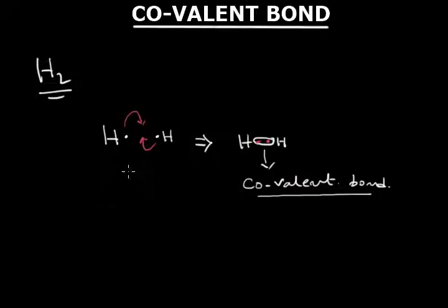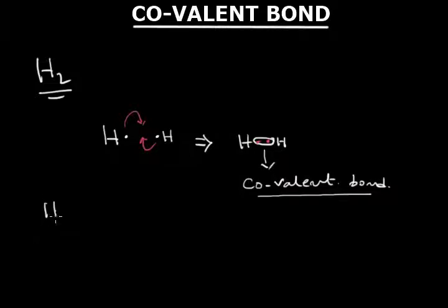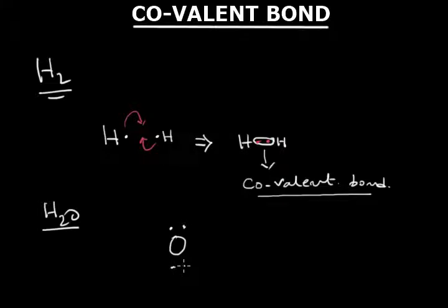In the H₂ molecule, hydrogen needs to get two electrons in its outermost shell because its nearest noble gas is helium. So the hydrogen molecule is formed accordingly. If we consider the water molecule, the central atom is oxygen. In the outer shell of oxygen, six electrons are present, and two hydrogen atoms are bonded to it.